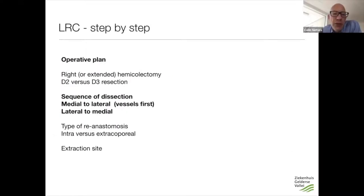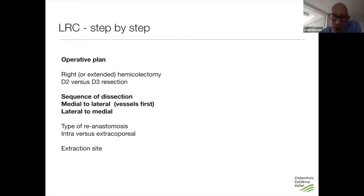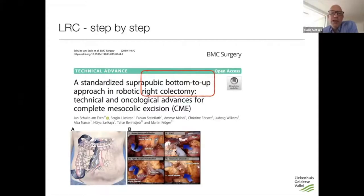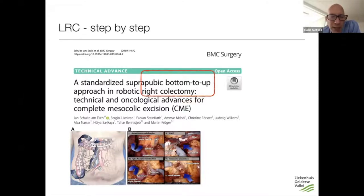What's going to be the sequence of your dissection? For a D3 dissection, most surgeons go to the vessels first and dissect medial to lateral, but it's also possible to dissect lateral first. Personally, when I prepared this presentation, I came across a publication I really liked because it describes a right hemicolectomy bottom-to-up — similar to the TME technique — and that is actually the way I perform the laparoscopic right hemicolectomy. I do it a little differently than Andreas and Walter.